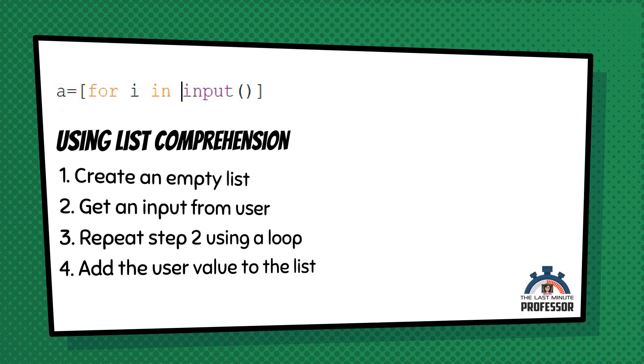Next step, step number four, the value user gives will be in I and that is the one that needs to be included in the list. So let me mention I before for.